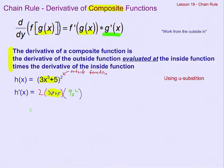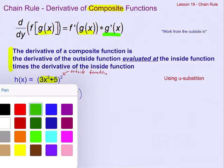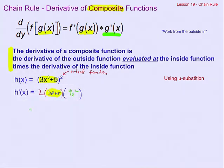You certainly can multiply the 2 times the 9x squared. If you really wanted to, you could also distribute it, but you don't have to.